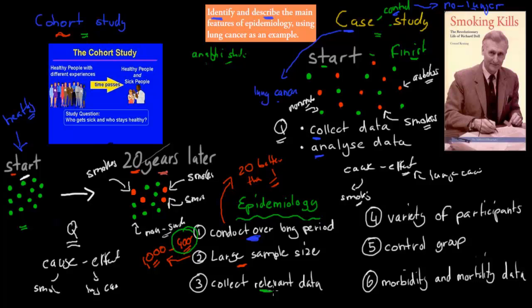We also want to collect relevant data. If we think smoking causes lung cancer, we want to make sure we ask in the questionnaire if they're smokers, but also how long they've been smoking, how many cigarettes they smoke, and whether they're exposed to passive smoke. We want to collect data which is relevant to what we're actually studying — not, for example, whether they watch the Simpsons or South Park. We want data that gives us more insight into cause-and-effect relationships.